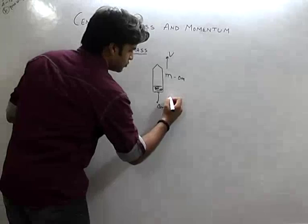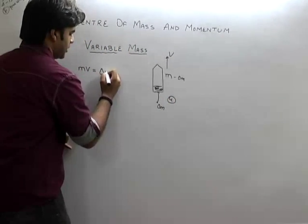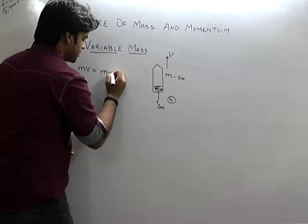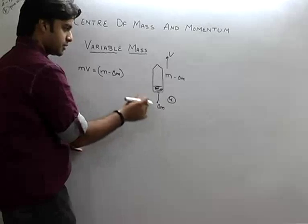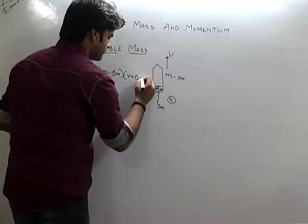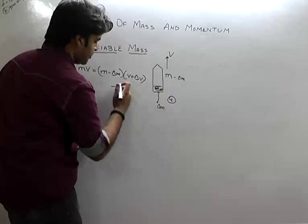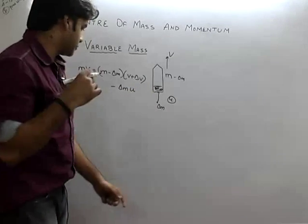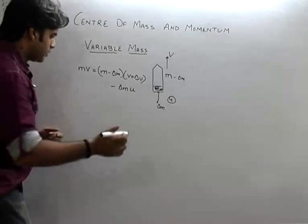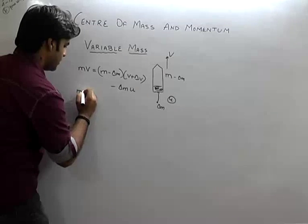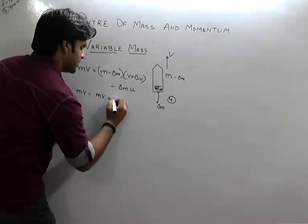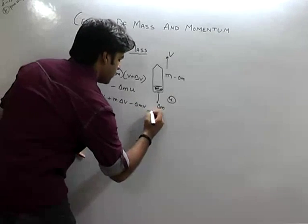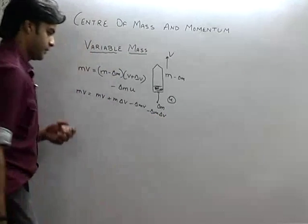Let us suppose the gases exit with velocity U. So applying conservation of momentum: initial momentum M·V equals rocket momentum (M minus delta M) times (V plus delta V), minus momentum of gases delta M times U. Expanding this: M·V = M·V + M·delta V minus delta M·V minus delta M·delta V.